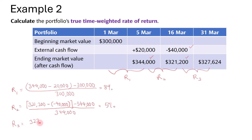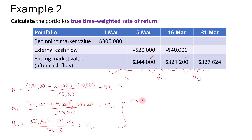For the last sub-period, we take 327,624 minus 321,200 over 321,200, giving us 2%. The true time-weighted return for the month is therefore: (1 + 0.08) × (1 + 0.05) × (1 + 0.02) − 1, which gives approximately 15.67%.